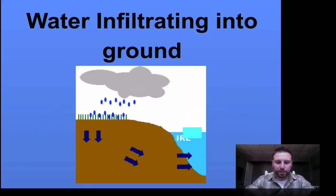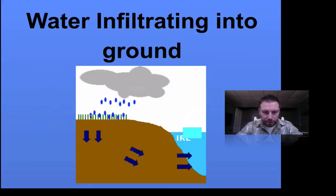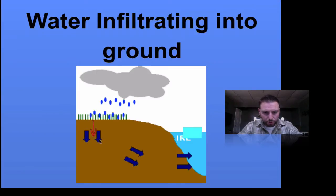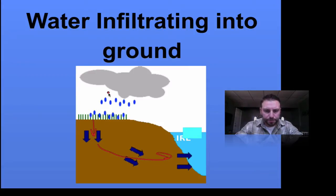This is water infiltrating through the ground. You can see here we have vegetation. Remember, when we decrease vegetation it causes runoff. So when we increase it, we have more infiltration. Our vegetation is here — water can infiltrate, percolate, and then move into our surface water sources eventually.